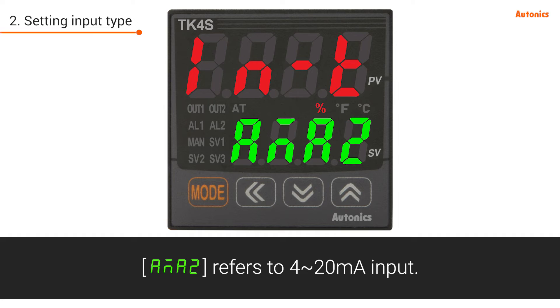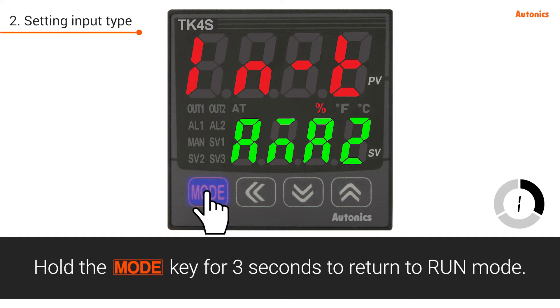AMA2 refers to 4 to 20 mA input. Hold the mode key for 3 seconds to return to run mode.